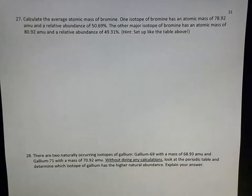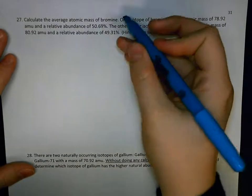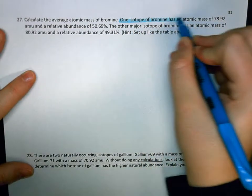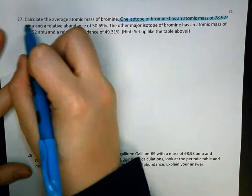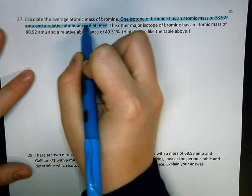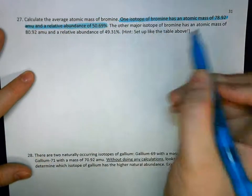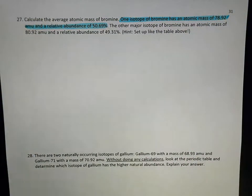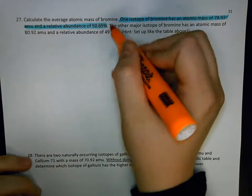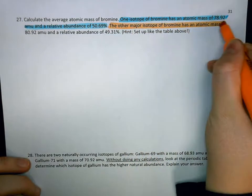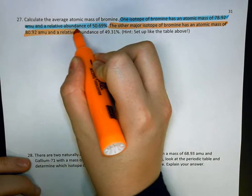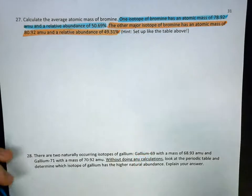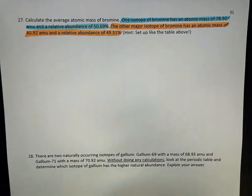Calculate the average atomic mass of bromine. One isotope of bromine has an atomic mass of 78.92 AMU and a relative abundance of 50.69 percent. The other major isotope of bromine has an atomic mass of 80.92 AMU and a relative abundance of 49.31 percent.